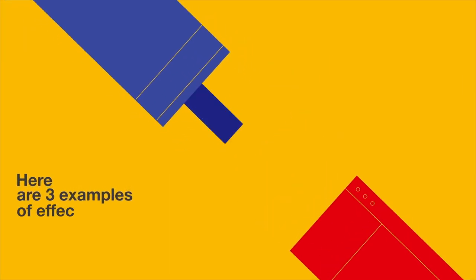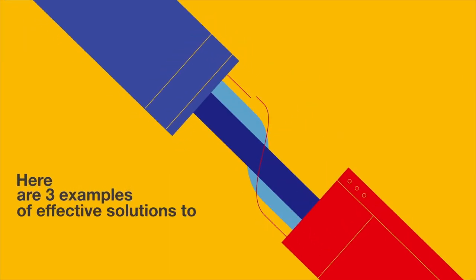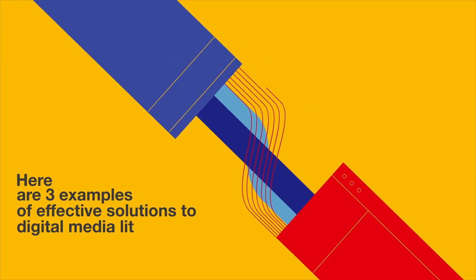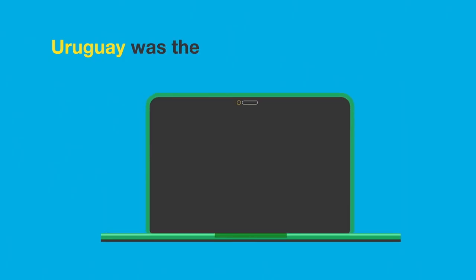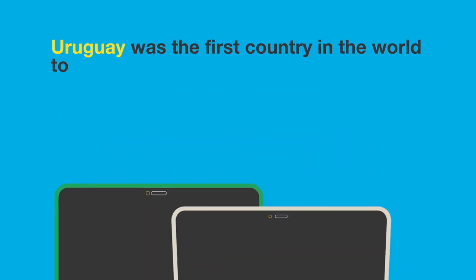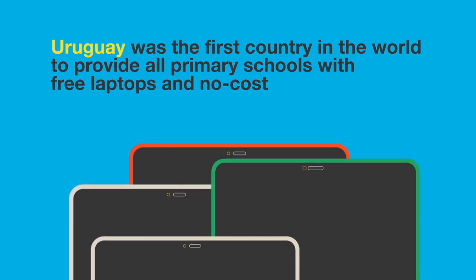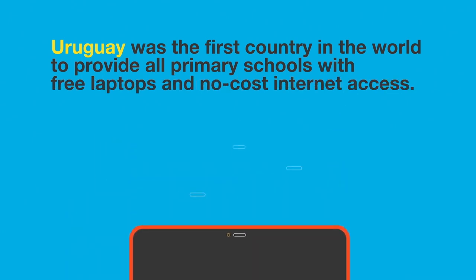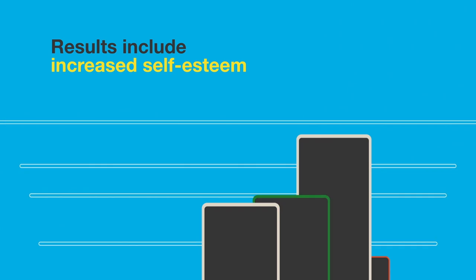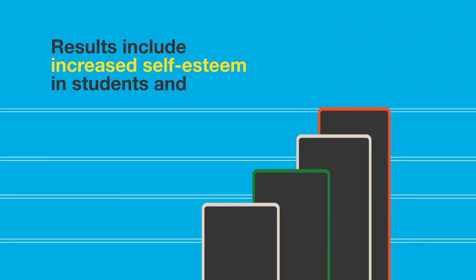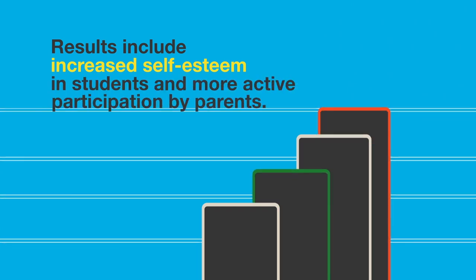Here are three examples of effective solutions to digital media literacy gaps. First, Uruguay was the first country in the world to provide all primary schools with free laptops and no-cost internet access. Results include increased self-esteem in students and more active participation by parents.